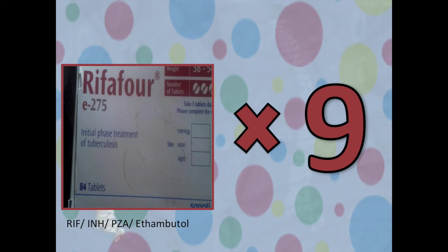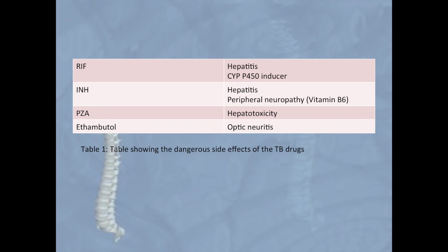Drug doses are individualized by weight for each patient. Patients with multi-drug resistance (MDR-TB) and extreme drug resistance (XDR-TB) are treated with more aggressive drug therapy for longer periods, tailored to the specific mutations of the TB bacillus. Patients are watched taking their drugs to improve adherence — this is called the directly observed therapy, or DOTS, program. Common side effects to watch for include hepatitis, peripheral neuropathy, and optic neuritis. Rifampicin is a cytochrome P450 inducer, so dose adjustments of other drugs may be needed — particularly important in the South African context, where first-line antiretrovirals for HIV are metabolized by the liver. Peripheral neuropathy can be managed with vitamin B6 supplementation.